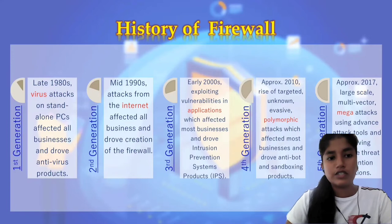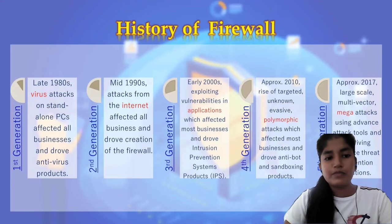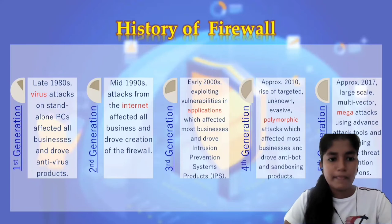Generation 1 is from 1980 to 1990. In the late 1980s, virus attacks on standalone PCs affected all businesses and drove antivirus products. Firewall became especially popular with the spread of the TCP/IP protocol. The first firewall proposal — a packet filter — came in 1989 by Jeff Mogul of Digital Equipment Corp.